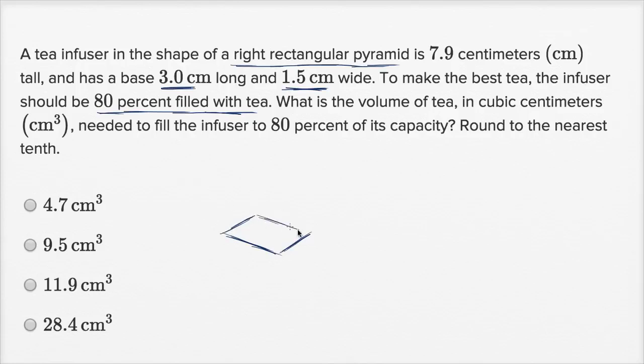Let me draw that. Actually I can even label it. So this is 3 centimeters, this is 1.5 centimeters. And then it is 7.9 centimeters tall. So if we went from the center and if we were to go straight up, it's 7.9 centimeters tall. So this dimension right over here is 7.9 centimeters, and it's a right rectangular pyramid.